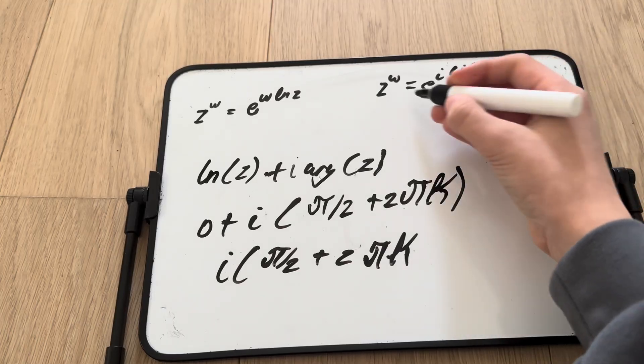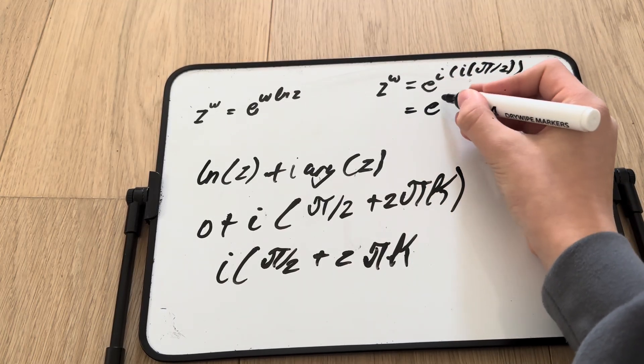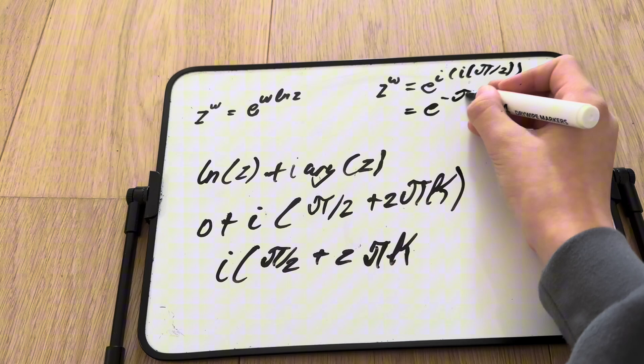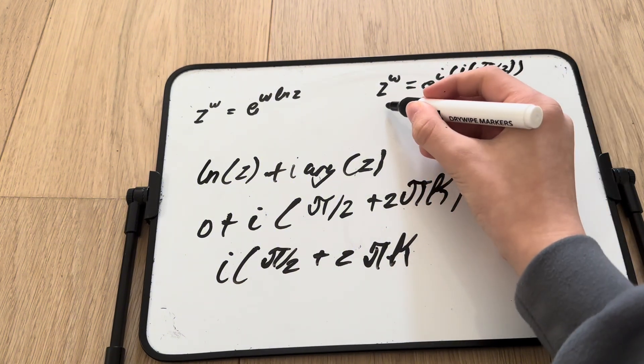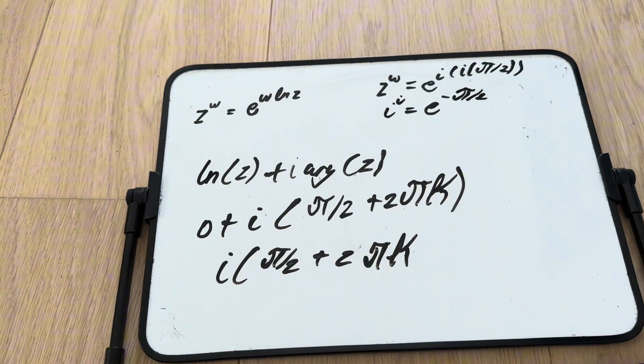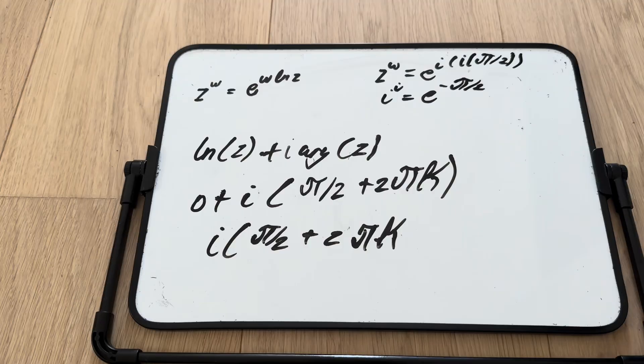And obviously, that's equal to e to the negative pi over 2. So we got the same result as in both our other methods.